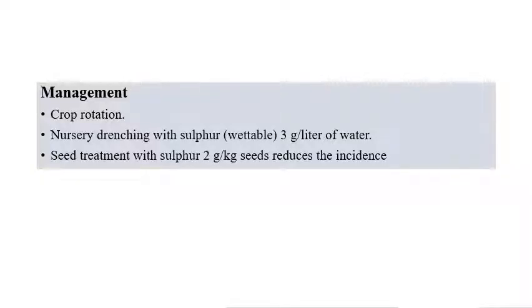For management of Smudge: practice crop rotation, nursery drenching with sulfur at 3 grams per liter of water, along with seed treatment with sulfur at 2 grams per kilogram of seeds. These measures can reduce the incidence of Smudge disease.